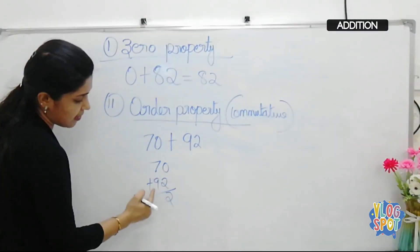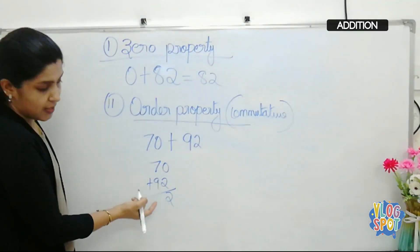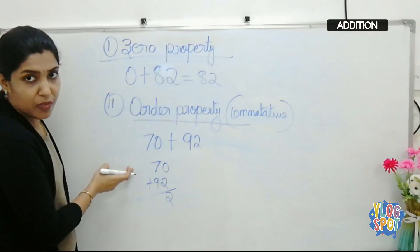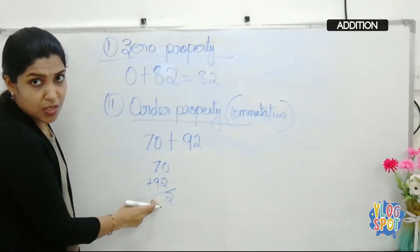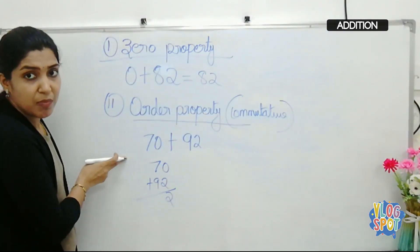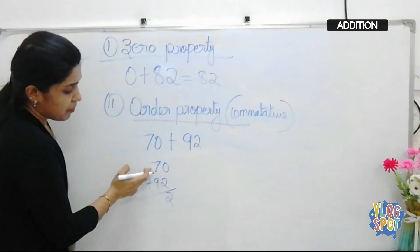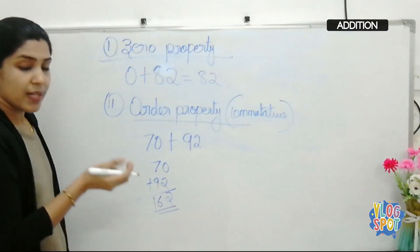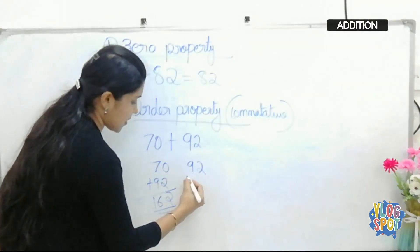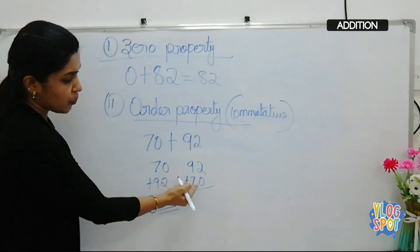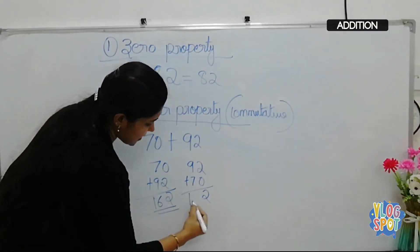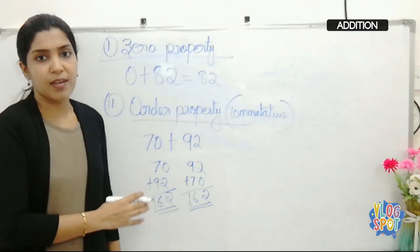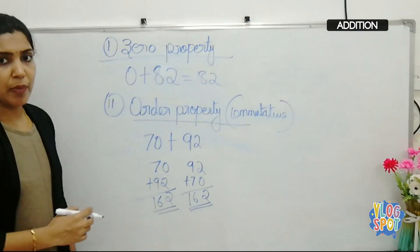0 plus 2 is 2. Then 7 plus 9 is 16. Since this is the last column, we can keep the two-digit number 16 here, giving us 162. Now if we change the order — write 92 plus 70 instead — we get the same result: 162. So if we change the order, the result does not change. This is the order property, or commutative property of addition.